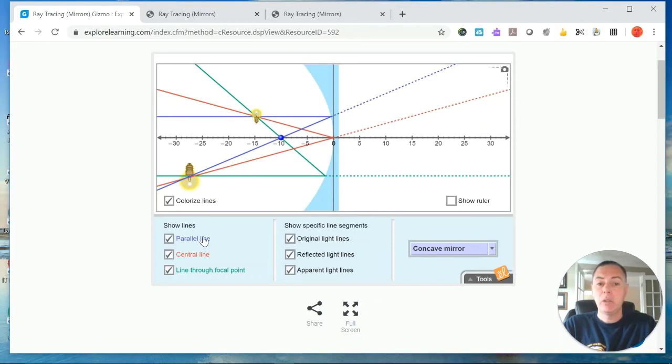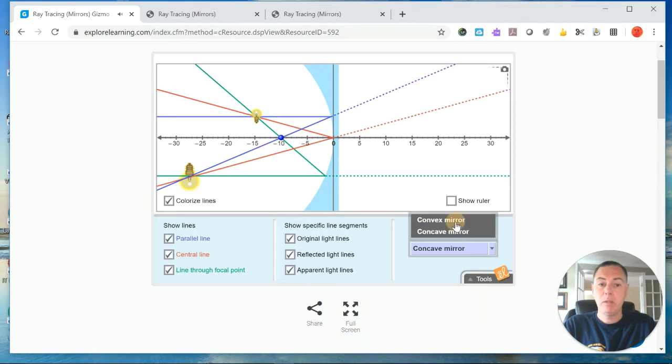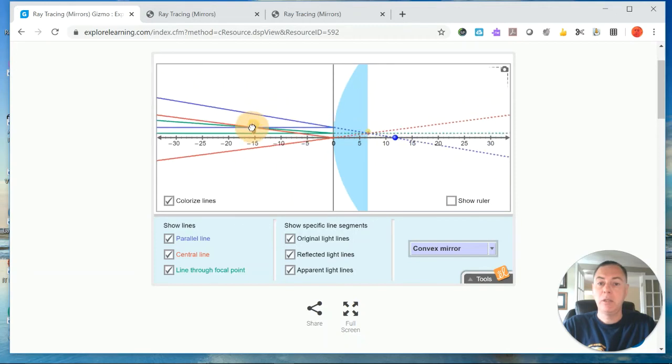So you have options for using concave mirror, convex mirror, you can change the focal length, you can also change the position of the actual object itself.